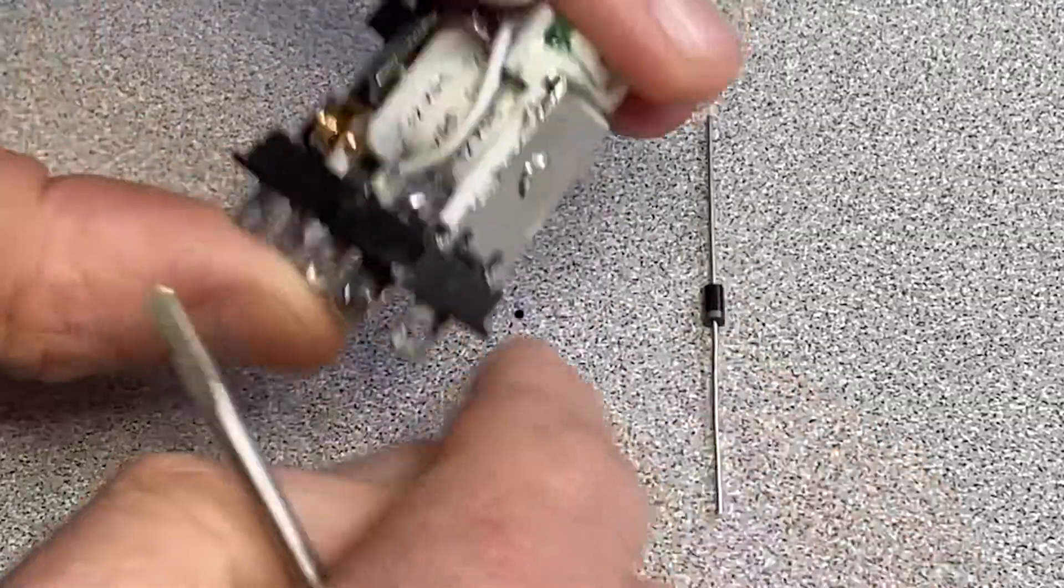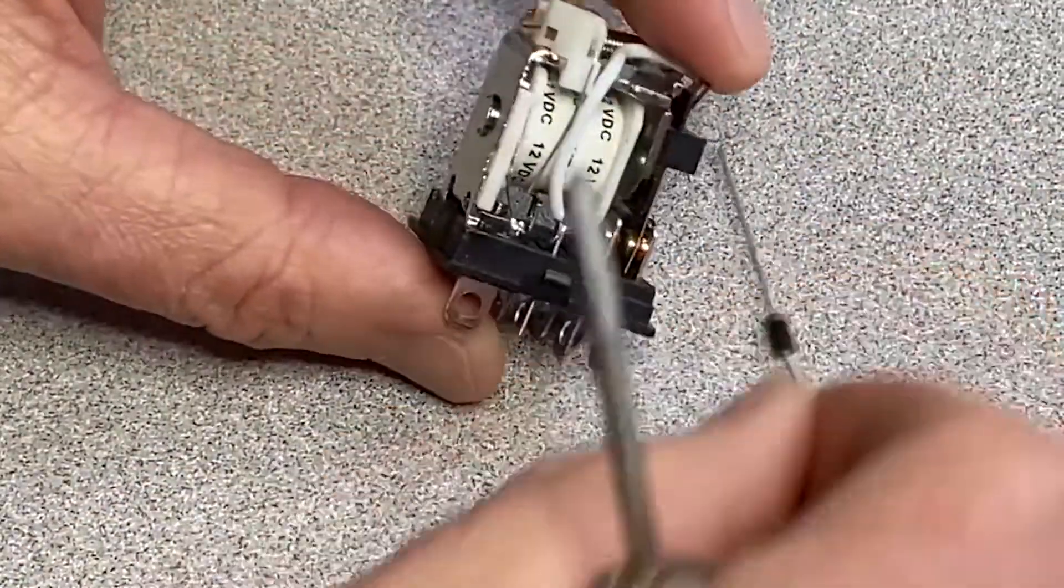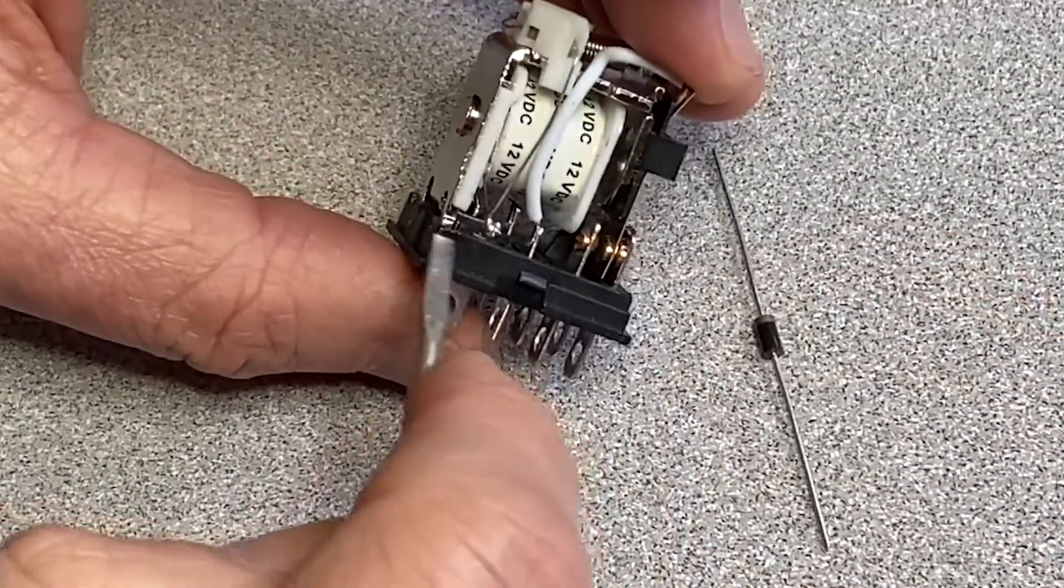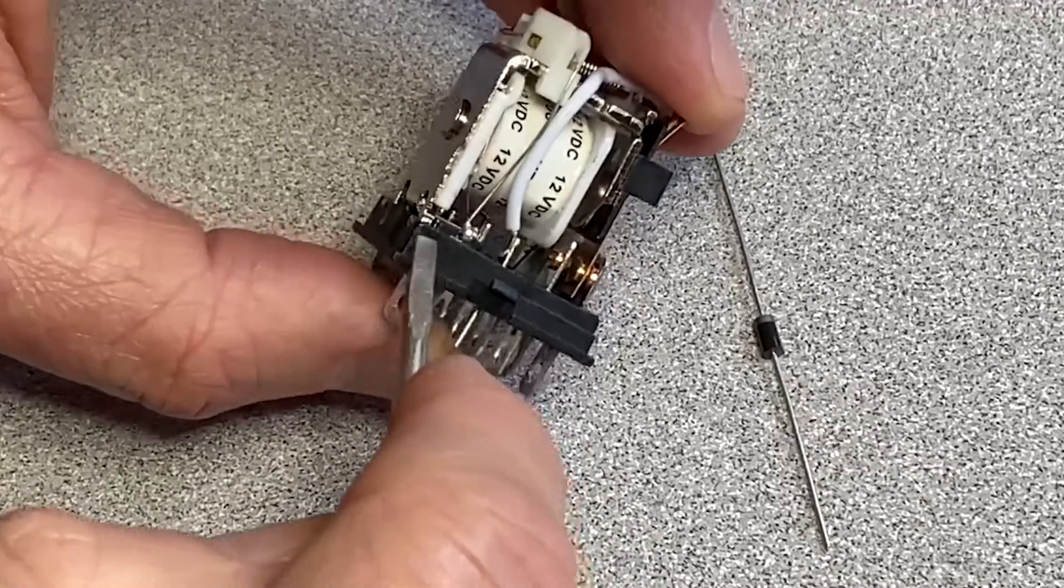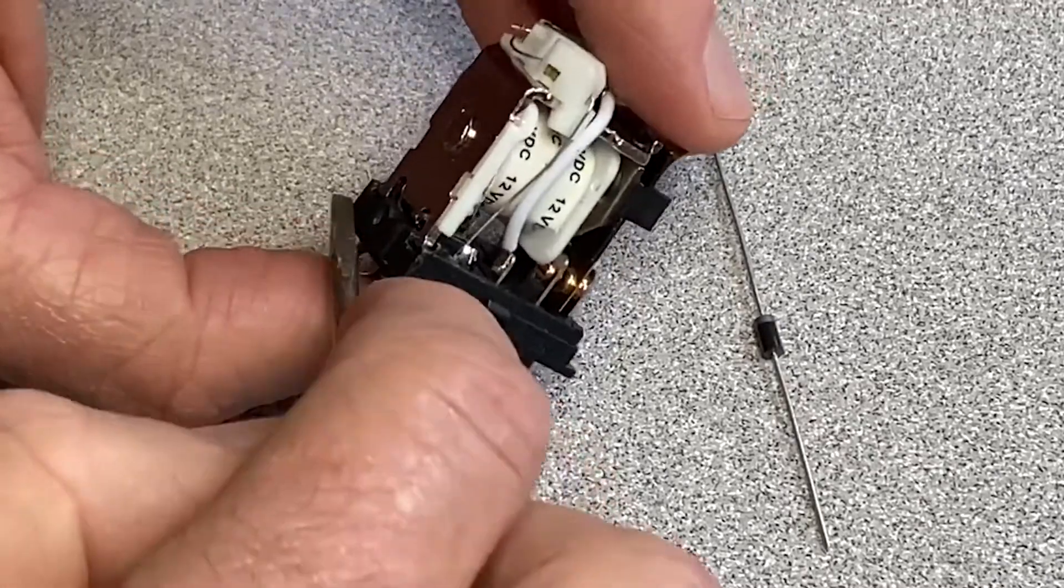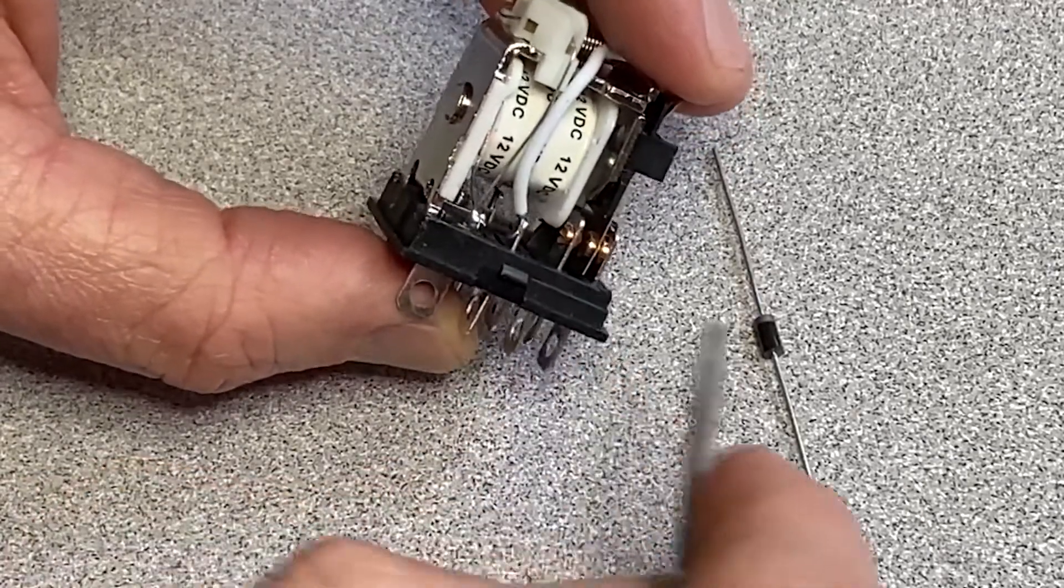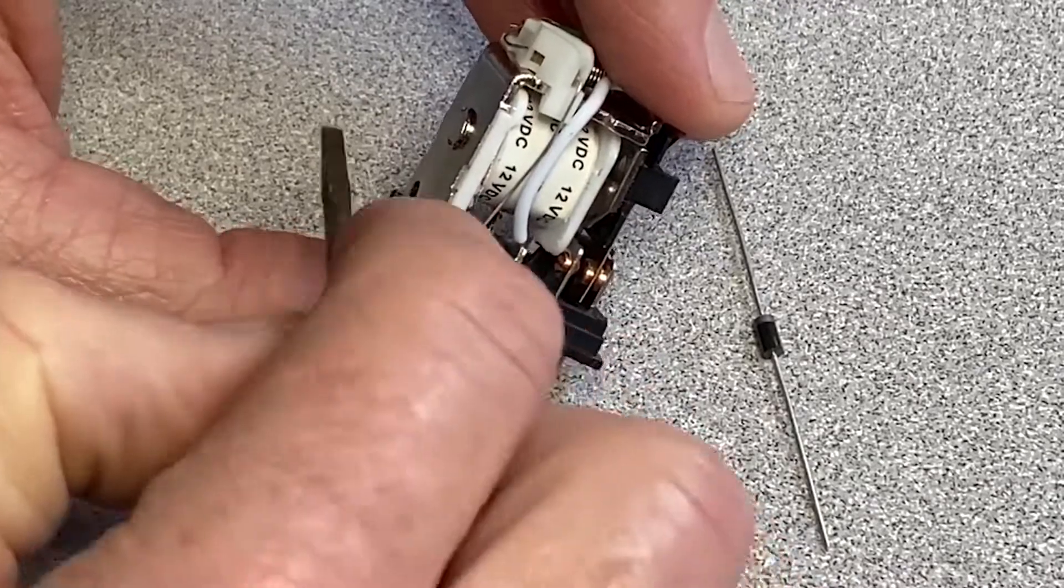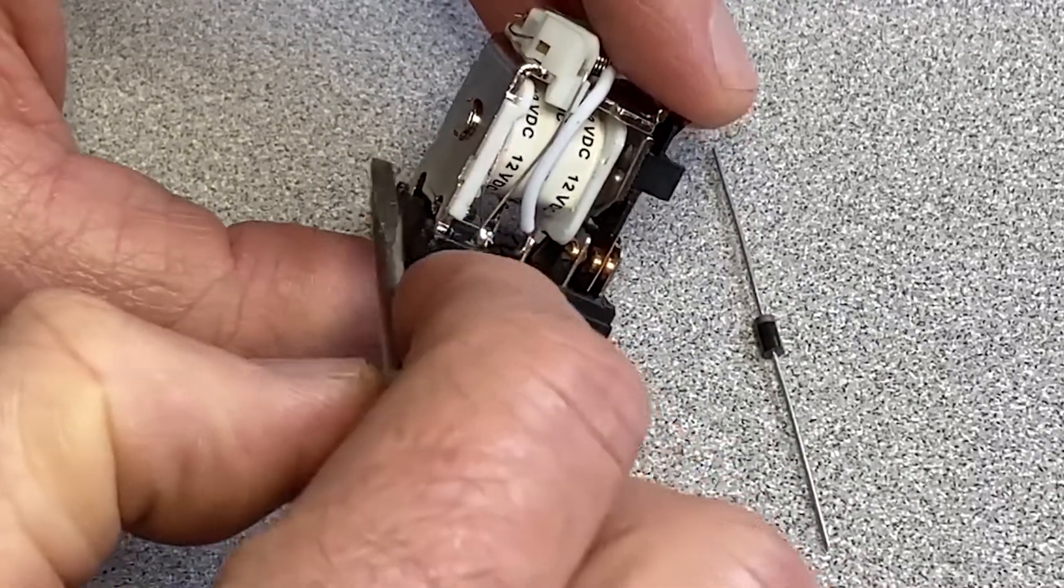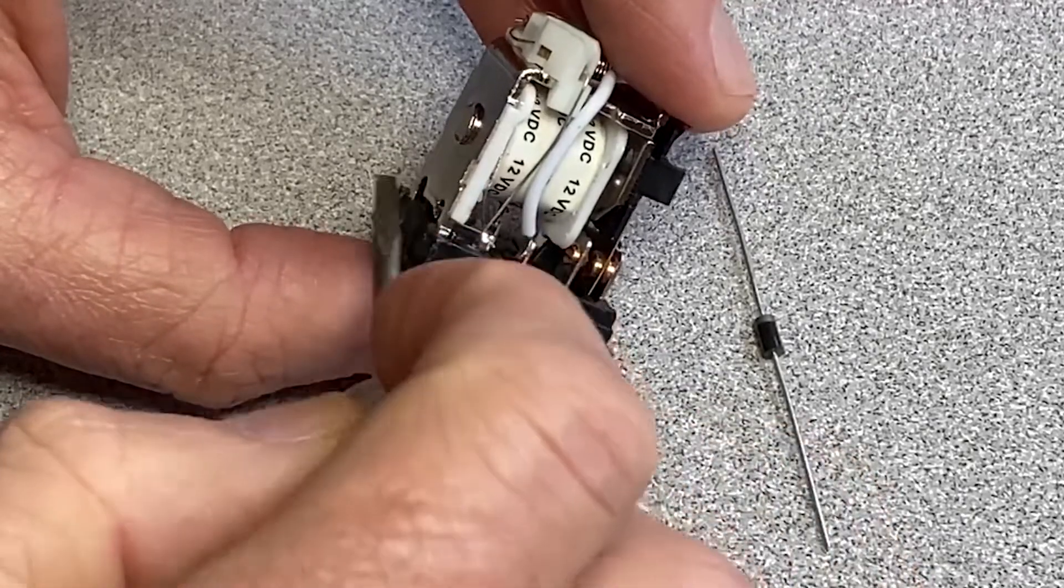Then on the backside, when you turn the power off, the current wants to travel basically backwards on your circuit. So it's going to want to come back out the positive line, and you really don't want that.